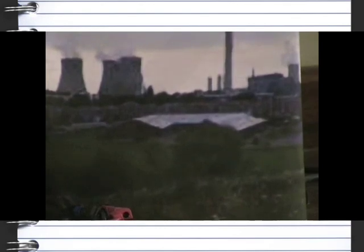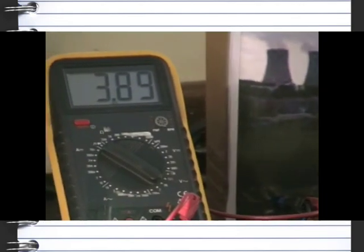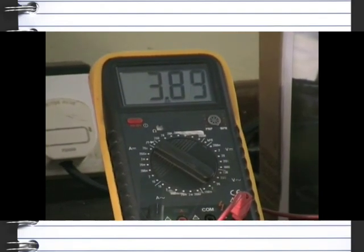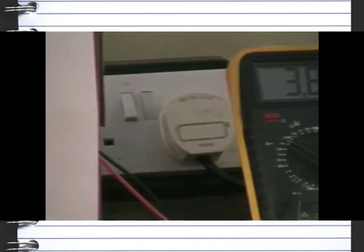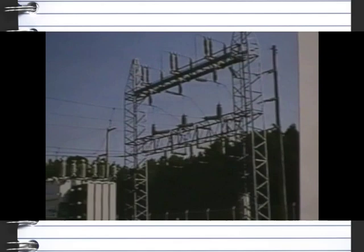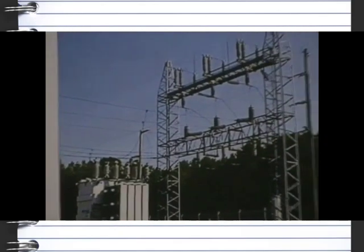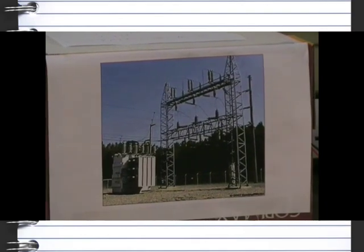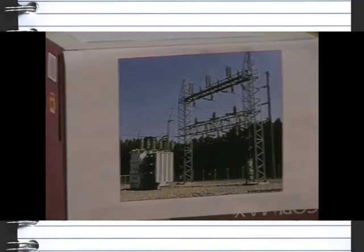We're going to look at how transformers are used in the national grid. Here we've got a power station which uses the generators to generate electricity. That will send a relatively low current out to the step-up transformer. The step-up transformer will then increase the voltage, so you have a very, very high voltage, and therefore a low current. The low current is needed because then you have the less energy wasted as heat. So you can see that we've gone from about 3 volts up to 200 volts here.